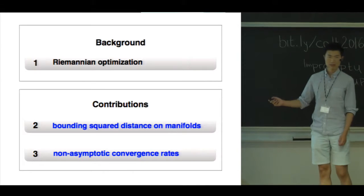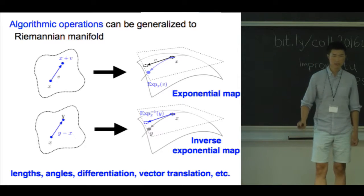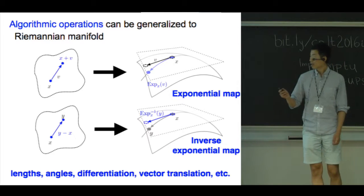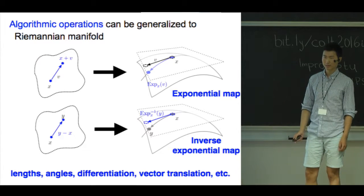But first let's start with some background. How does the Riemannian optimization algorithm work? Well it works roughly the same as a vector space optimization algorithm.